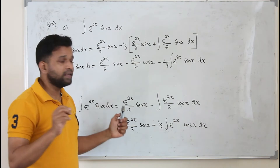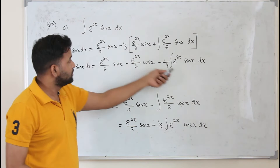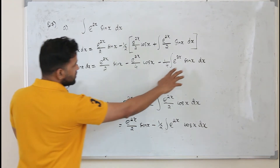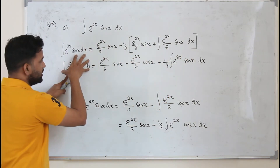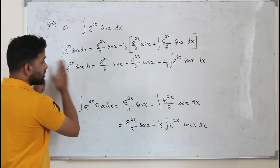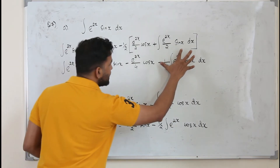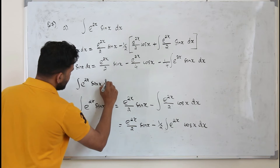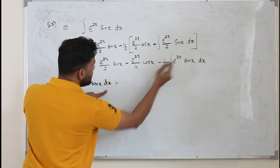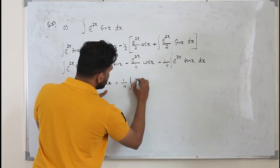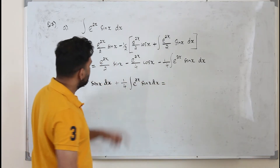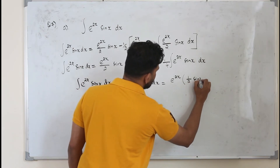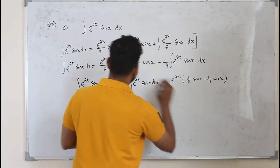This is the key insight: we get the same integral on both sides. Instead of applying integration by parts endlessly, we take this term to the left side as a common factor. So: integral e to the power 2x sin x dx plus one quarter integral e to the power 2x sin x dx equals the remaining terms, giving five over four integral e to the power 2x sin x dx equals e to the power 2x times (one half sin x minus one quarter cos x).